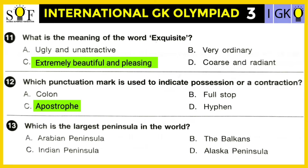Question number thirteen: Which is the largest peninsula in the world — Arabian Peninsula, the Balkans, Indian Peninsula, or Alaska Peninsula? The correct answer is the Arabian Peninsula. It is the world's largest peninsula.